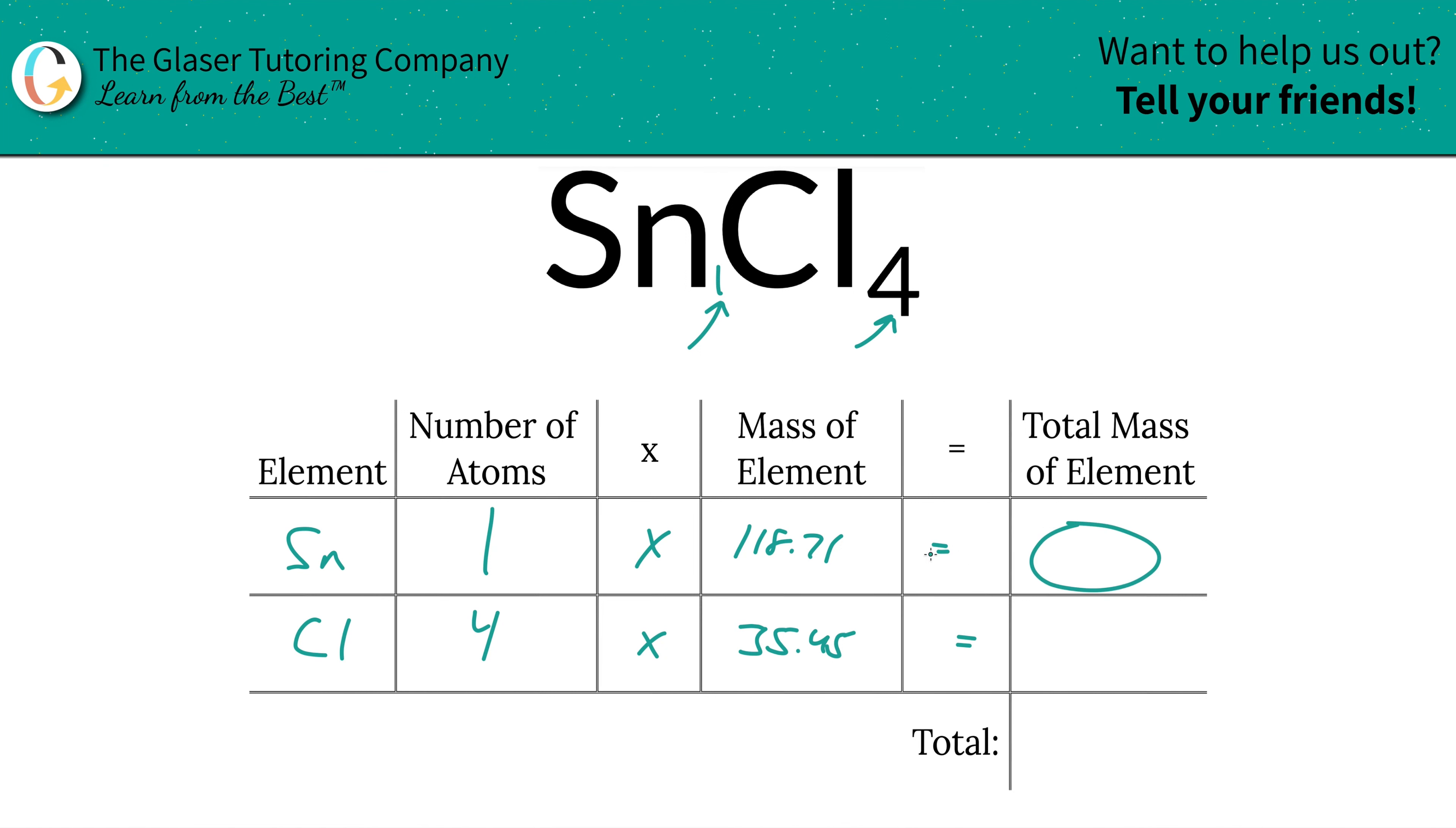And then we're going to find the total mass of each element in the compound by simply multiplying this row on a cross. So that's 118.71 for tin. Chlorine is going to be 141.8 units.